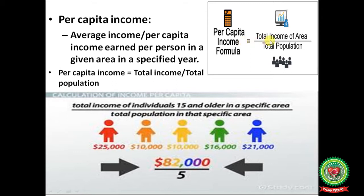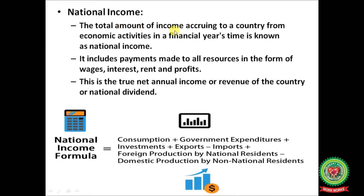National income. The total amount of income accruing to a country from economic activities in a financial year is known as national income. National income includes payments made to all resources in the form of wages, interest, rent, and profits. National income can be calculated as consumption plus government expenditure plus investment plus exports minus imports plus foreign production by national residents minus domestic production by non-national residents.